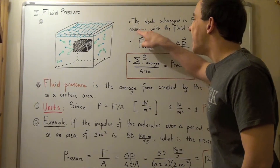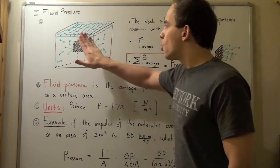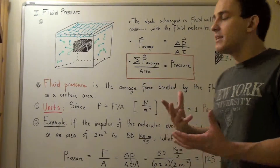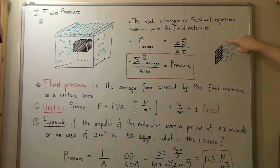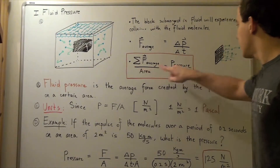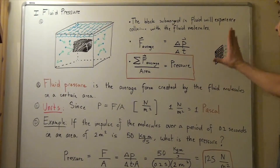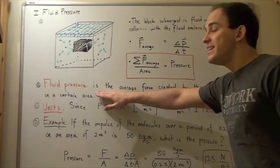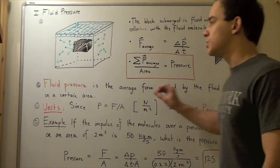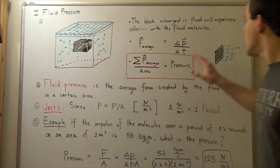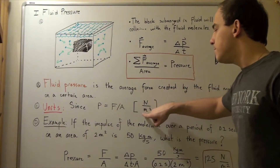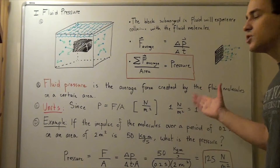What happens if we find the net force and divide it by the area? If we choose one of the faces of this solid block and sum up all the average forces created by all the molecules hitting or colliding with that face, then divide by the area, we get the pressure exerted on that area due to these molecules — known as the fluid pressure. The fluid pressure is the net average force created by the fluid molecules per some given area. The units of pressure are newtons divided by meters squared, and one newton per meter squared is known as one pascal.